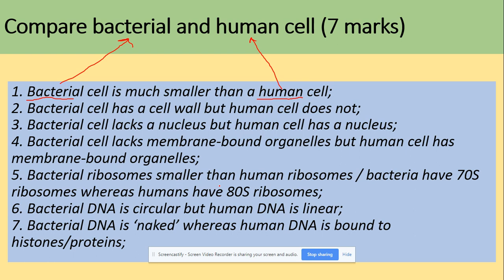Bacterial ribosomes are smaller than humans, so 70 and 80S. Finally we're talking about DNA here. So bacteria has circular DNA, DNA in human is linear, and bacterial DNA is naked, whereas the human's DNA is bound with proteins histones. So DNA and histones makes a complex called chromatin.